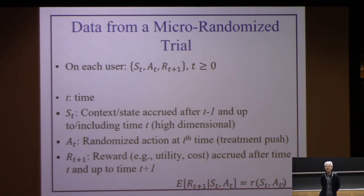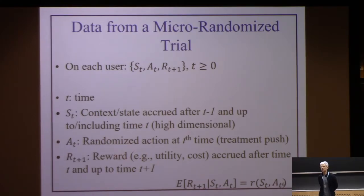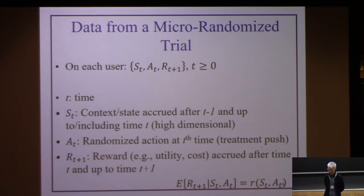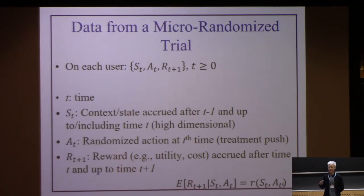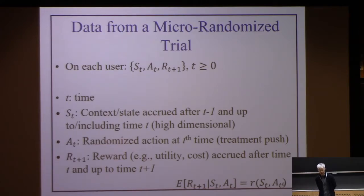How does the data look? On every user you have a time series of context, action, and reward. S is the context or state — usually a variety of sensor streams as well as potentially self-report. Then there's some action you could take at any given time. Today we're talking about binary actions: deliver a message versus don't deliver a message. And then there's something we're trying to achieve by sending that message — that's the reward. It's some near-term outcome.